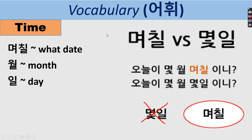For asking dates, 며칠 means 'what date?' 월 means month and 일 means day. For example: 오늘이 몇 월 며칠이에요? You use 며칠 here — not the other form — because when you write it, 며칠 means 'what date.' Remember, that is the correct form.